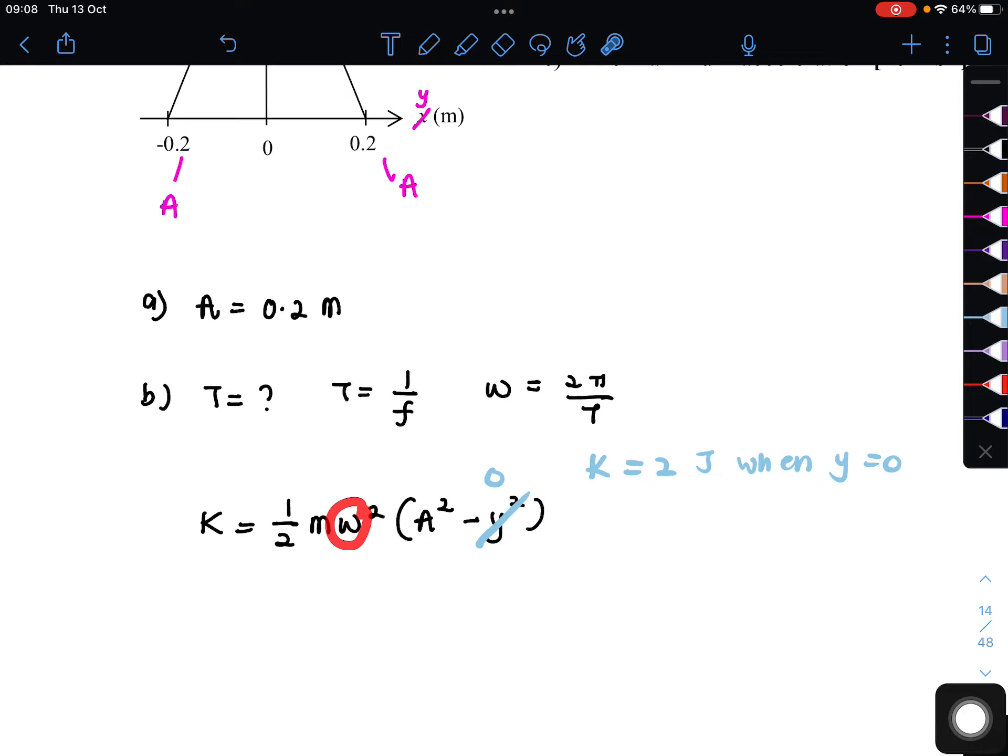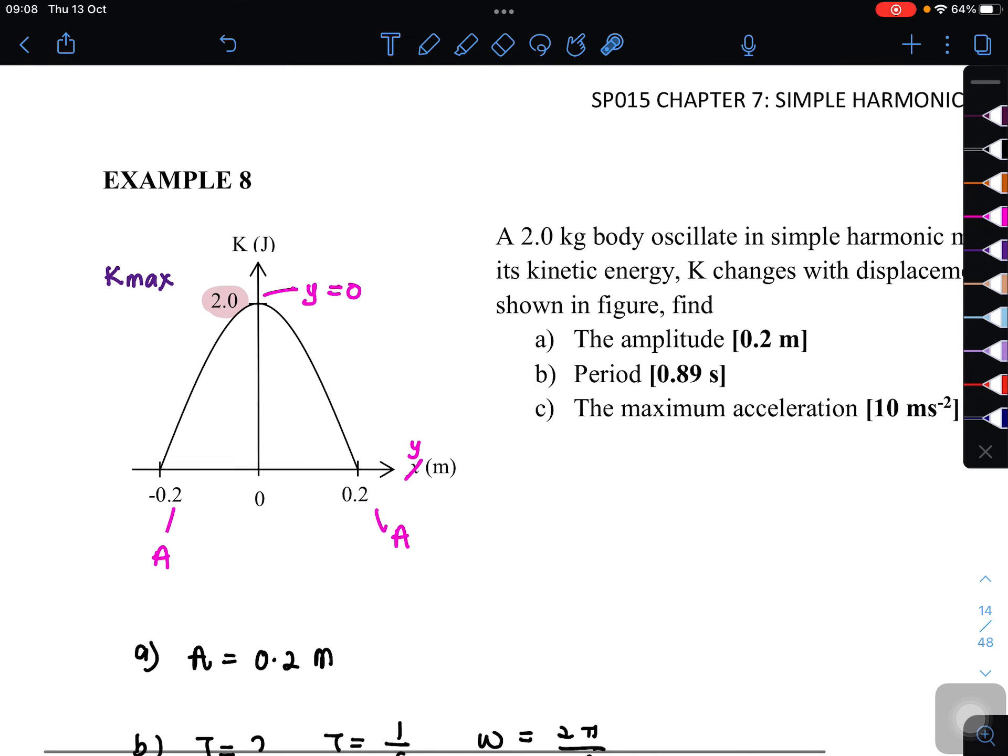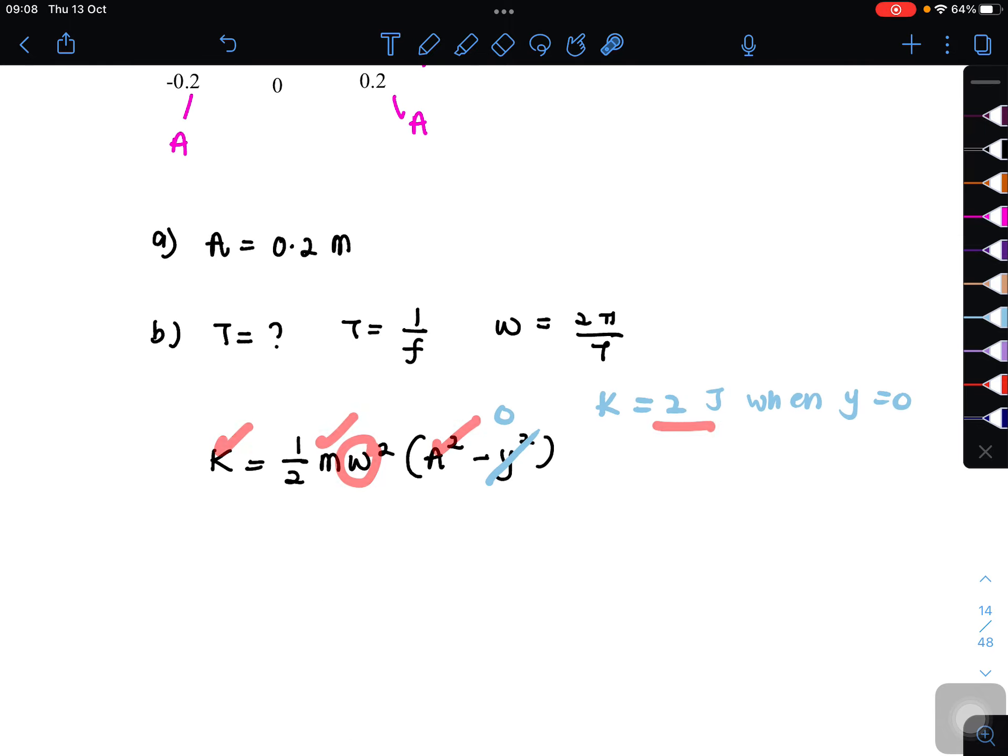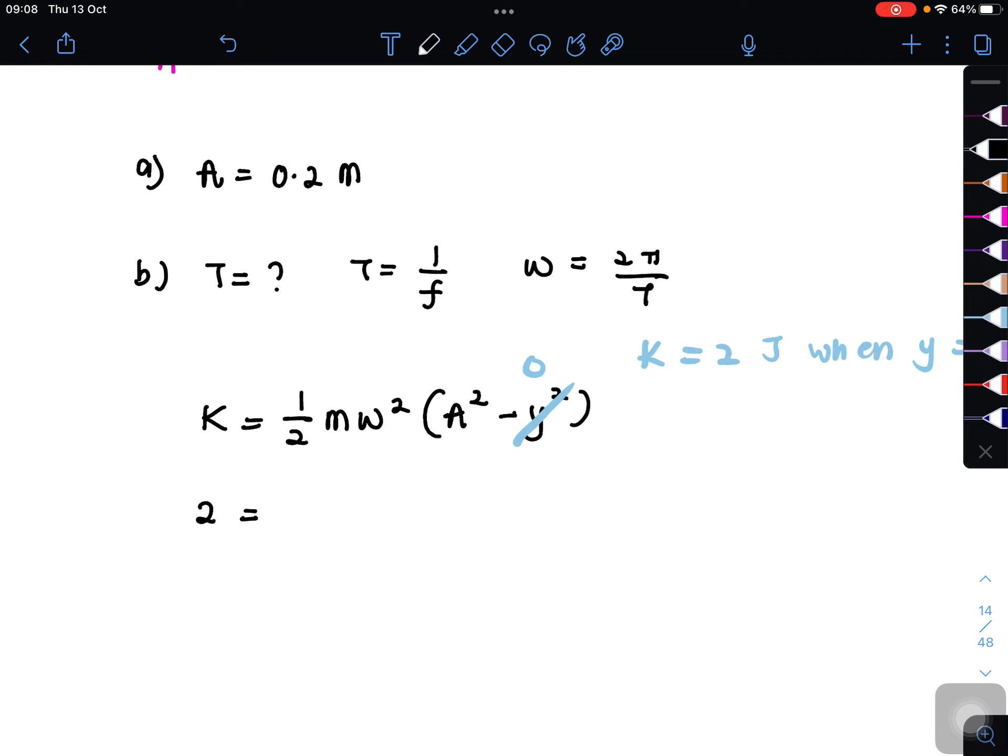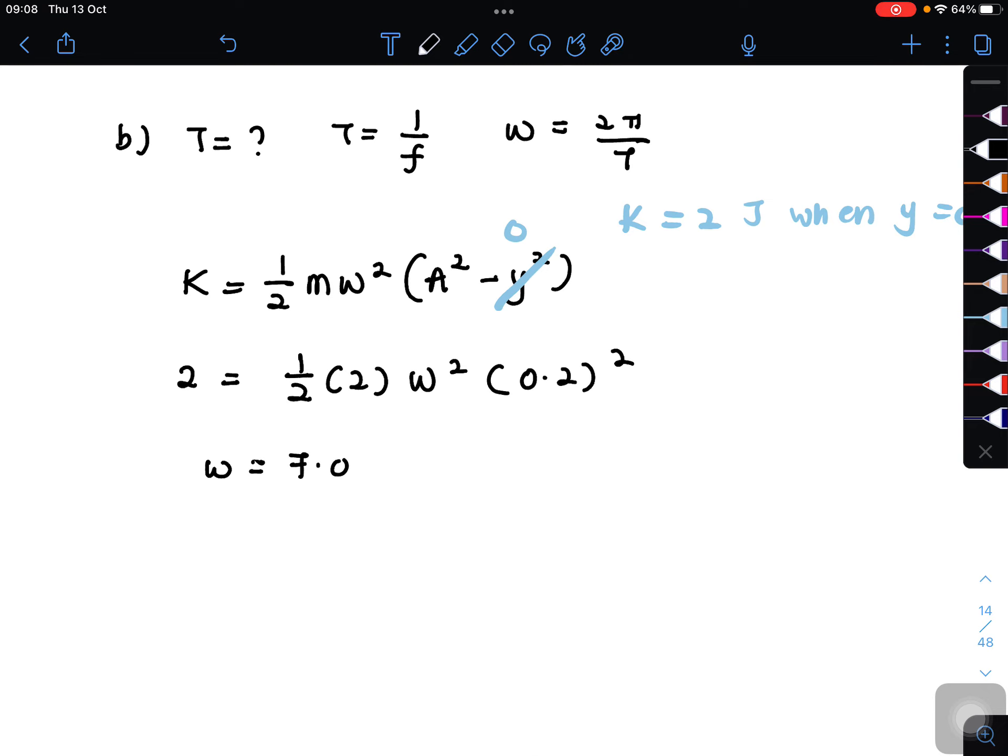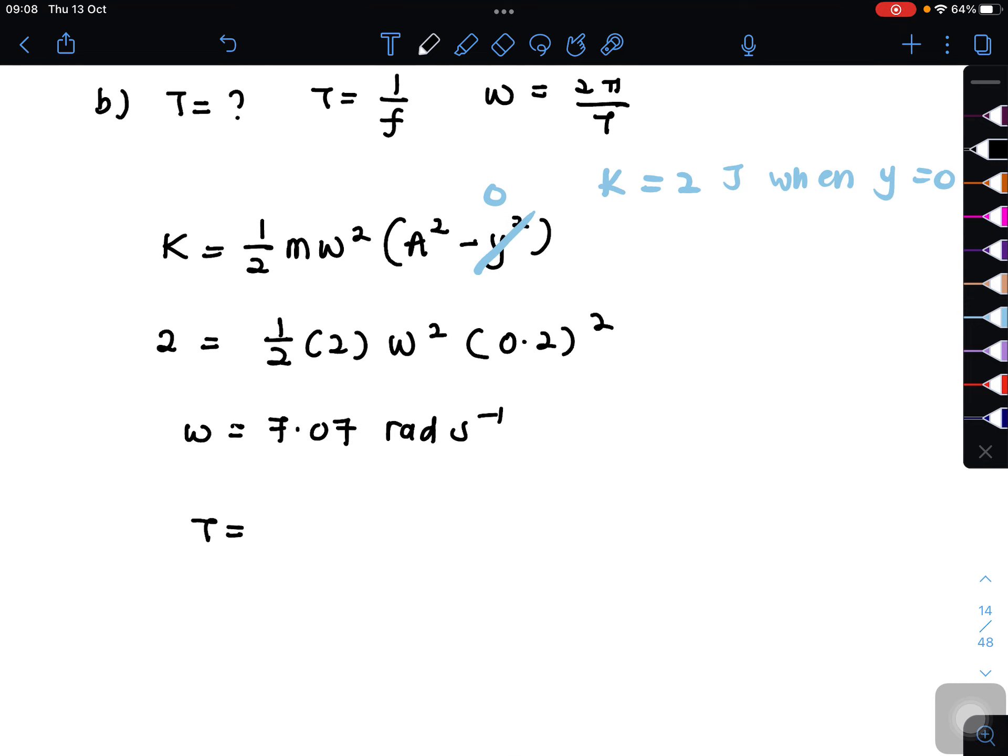So Y kita kosongkan di sini and then value for K adalah sama dengan 2 joule. So here Y will be equal to 0. K is equal to 2 joule when Y sama dengan kosong. So we can find the value for omega. Masukkan 1 over 2 mass 2 kg omega square and then 0.2 square. So we can get the value for omega which is equal to 7.07 radian per second. So daripada sini bolehlah kita dapatkan the value for period which is 2 pi over omega, 2 pi over 7.07 equal to 0.89 second.